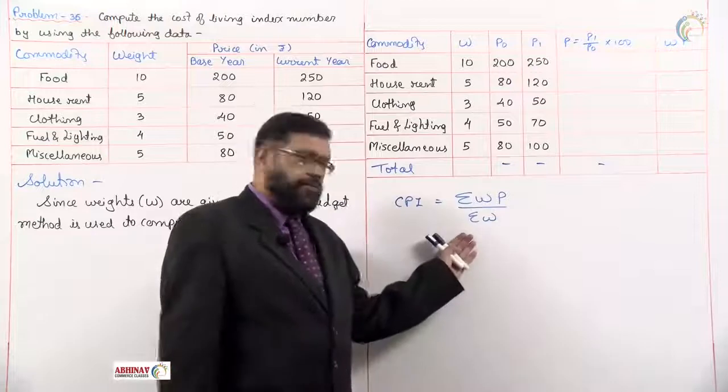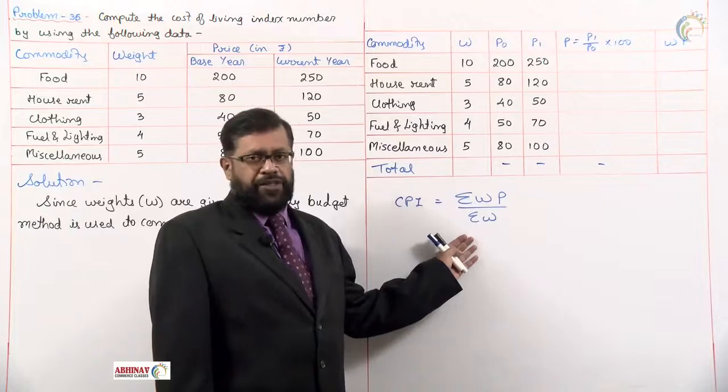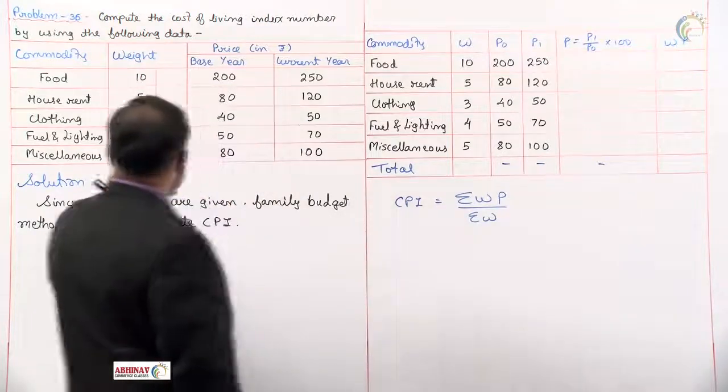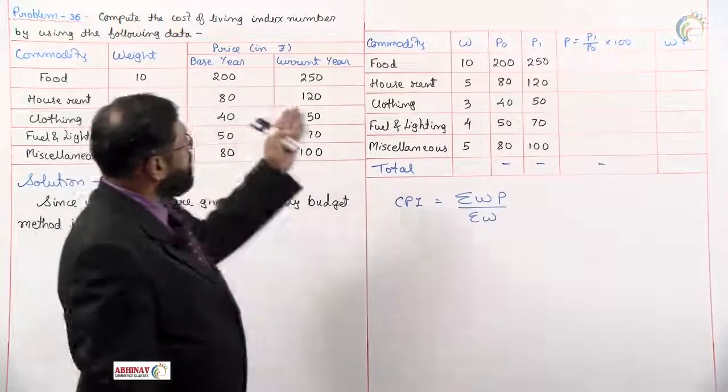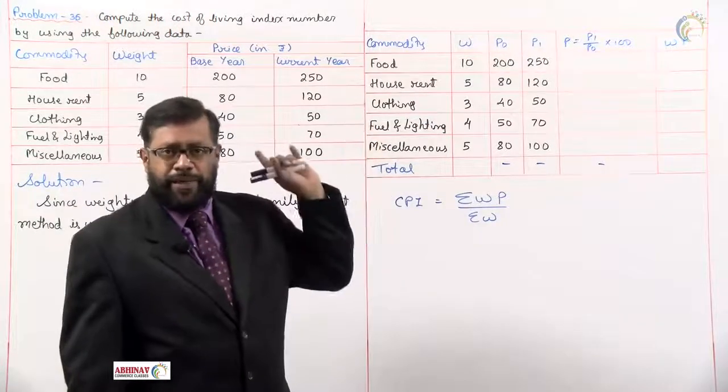What the formula will be? Based on the weighted arithmetic means, summation wp divided by summation w. We have copied the data as it is: commodity, weight, p naught, p1. Now what you require: price relative and then wp.